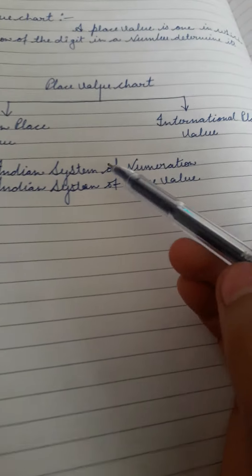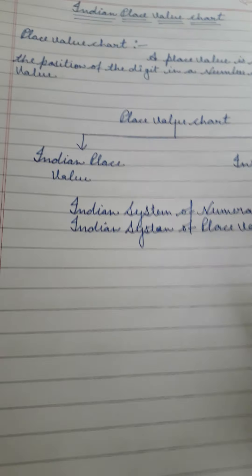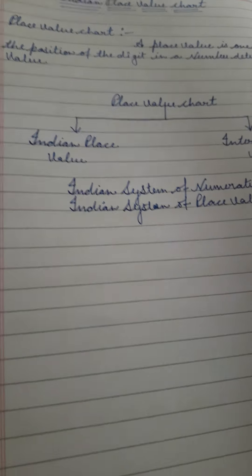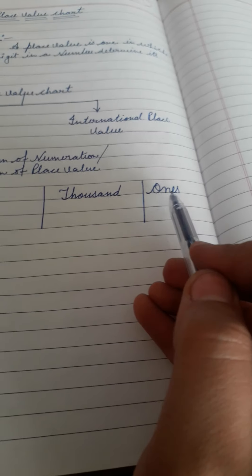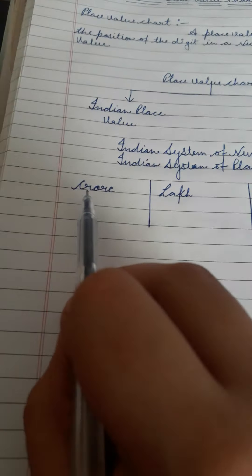Indian system of numeration, or we can say Indian system of place value. First of all we will make a chart of Indian system of place value. We include four periods in Indian system of place value. The first is ones, the second is thousands, the third is lakh, and the fourth is crore. Our first period is ones, which consists of three places.